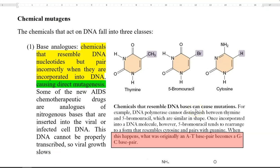We will now see in detail the different kinds of chemical mutagens that act on the DNA molecule. The first one is base analogs. These are chemicals that resemble a DNA nucleotide but pair incorrectly when they are actually incorporated into the DNA, thereby causing mutagenesis in the organism.